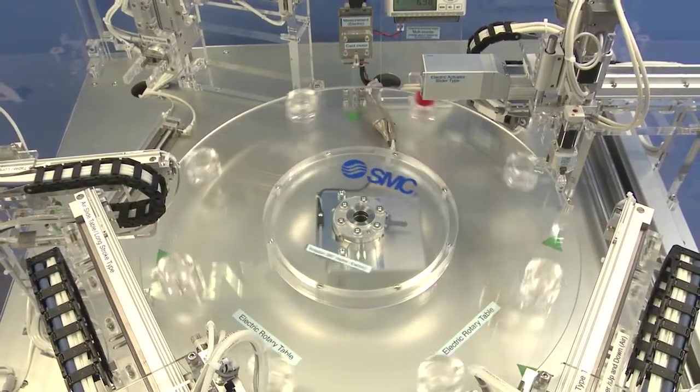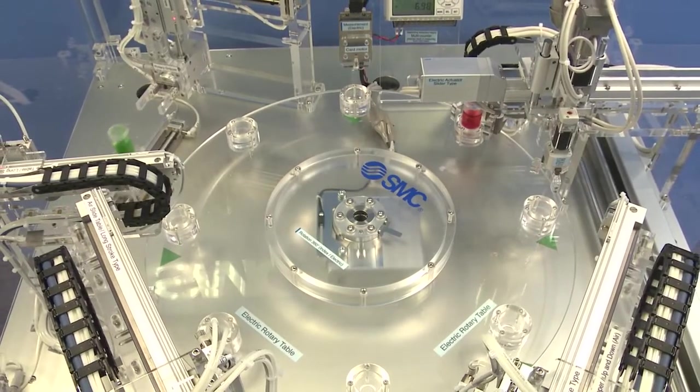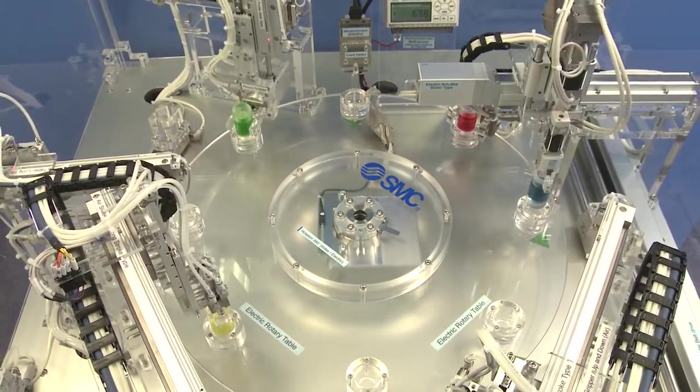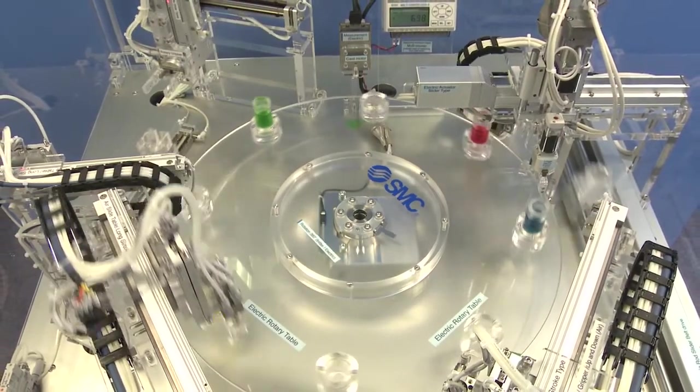First up, we have the LER electric actuator rotary table. This rotary table system allows up to 360 degrees motion as a continual action, so you can keep it going round and round.